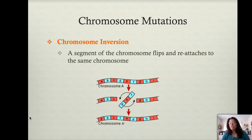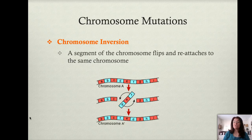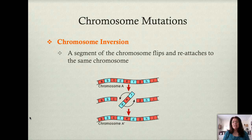A chromosomal inversion is a chromosome mutation where a segment of the chromosome — a whole piece of the chromosome — breaks off, flips over, and then reinserts in the same place where it broke off. The result is that that region of the chromosome has now been flipped 180 degrees. And if you look at the picture on the slide, you can see that what this does is reverse the order of the genes.